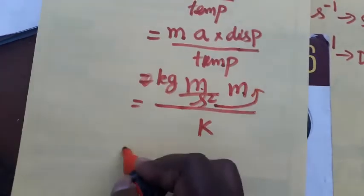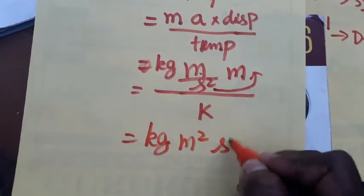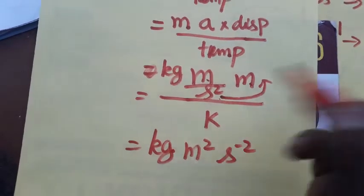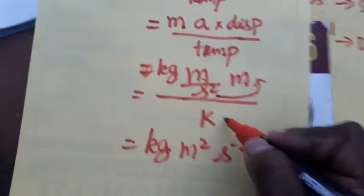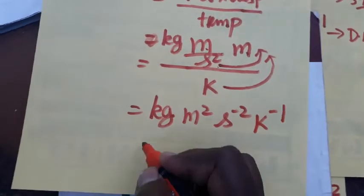Kg meter square second minus two. The power will be changing when we are taken denominator to numerator. This also I am taken denominator to numerator, kelvin minus one.